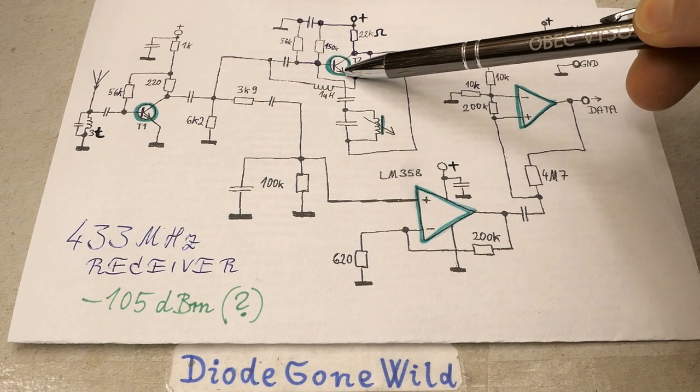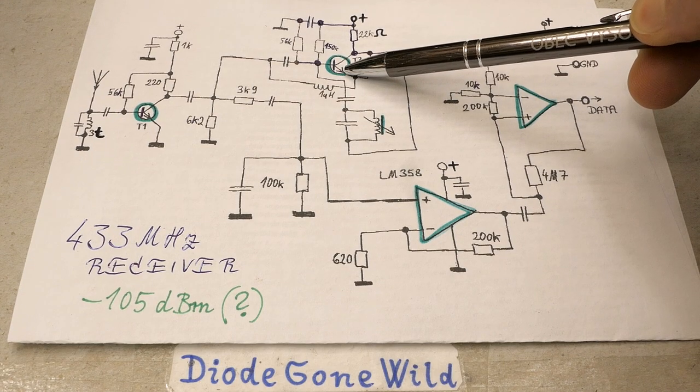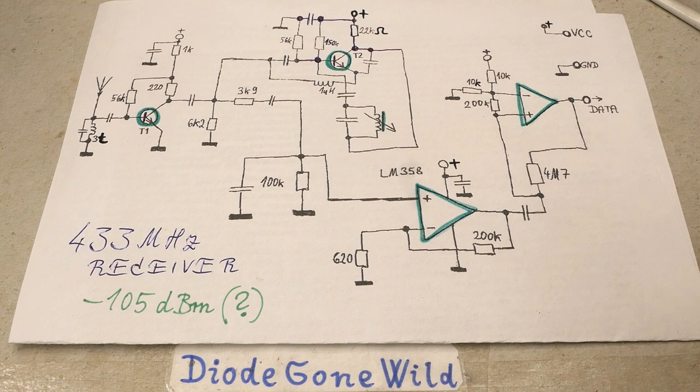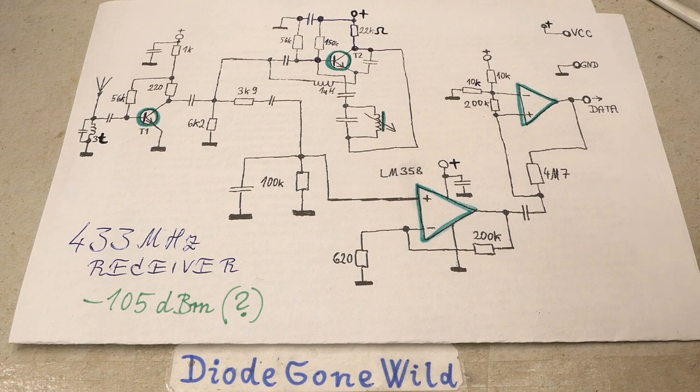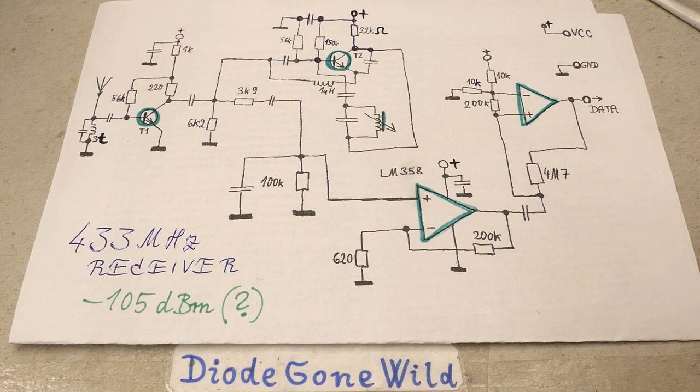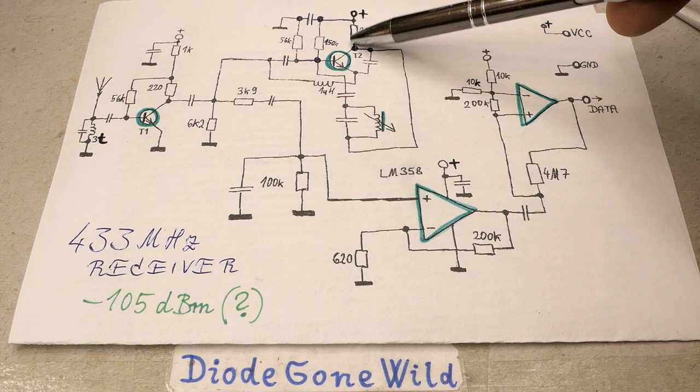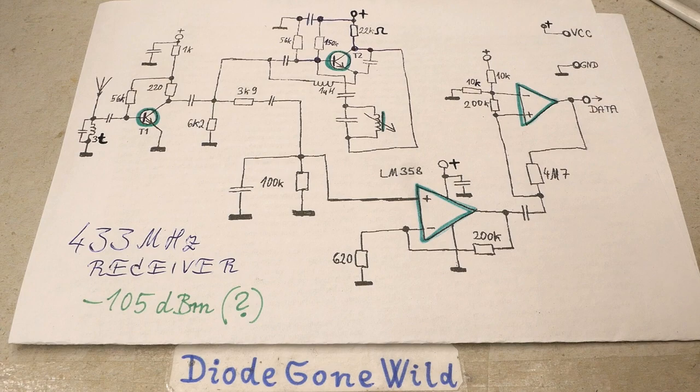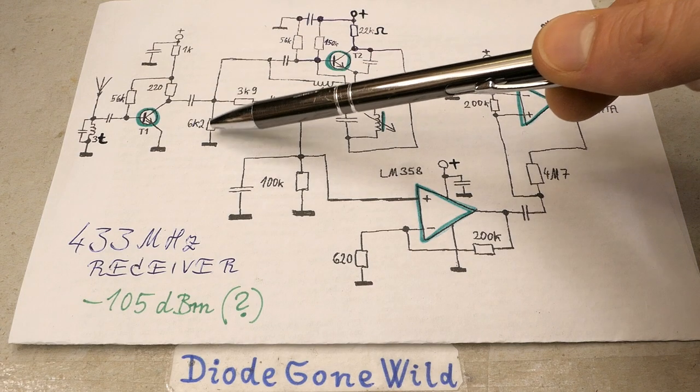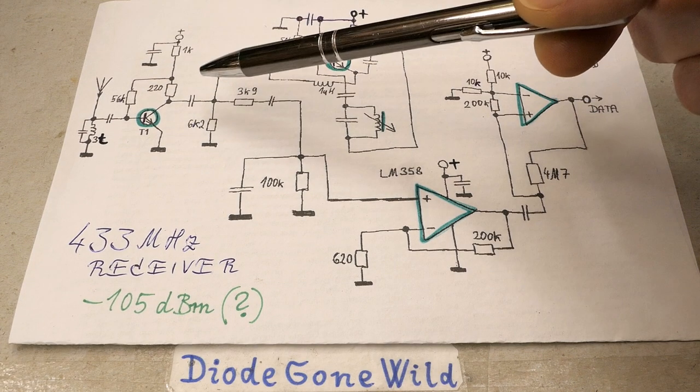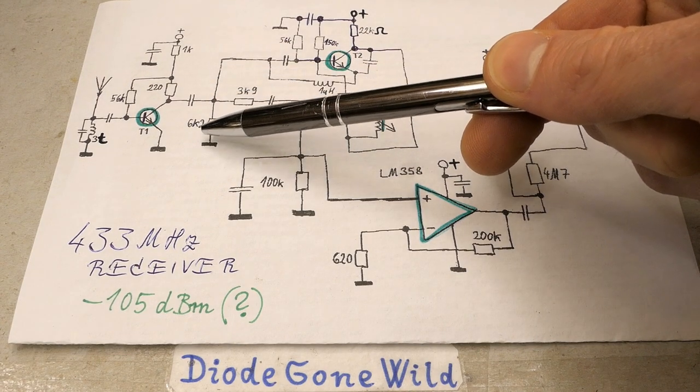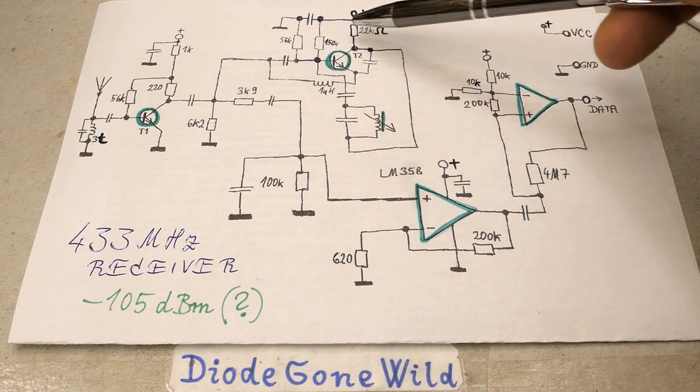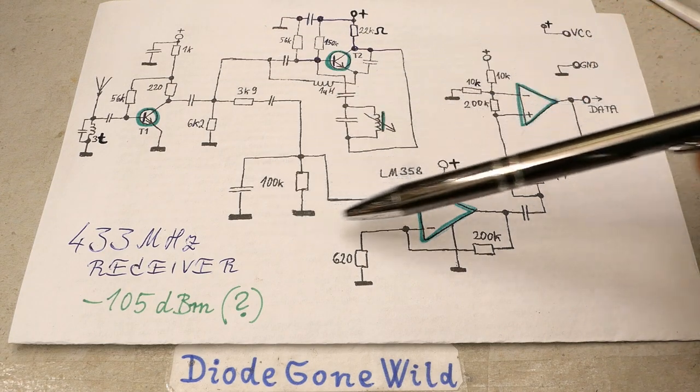Of course, when this stage starts oscillating, it draws more current. This is probably how the oscillations are quenched. It's powered via this coil and this resistor. When it draws more power, it basically pulls its supply voltage down, and this quenches the oscillations. This entire stage is powered through this inductor and this resistor. The more it oscillates, the more voltage drop on this resistor. This is also where the demodulated signal comes from. The signal comes from the voltage drop of this resistor, which is proportional to the current consumption of this stage.